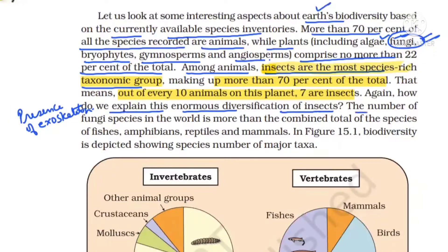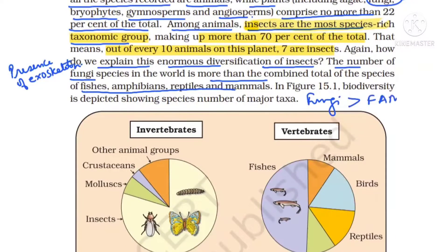Regarding fungi: the number of fungal species in the world is more than the combined total of fishes, amphibians, reptiles, and mammals. A learning tip: Fungi is more than FARM — Fishes, Amphibians, Reptiles, Mammals. Please remember they are NOT highlighting birds. Fungal species are more than the combined total of fishes, amphibians, reptiles, and mammals.